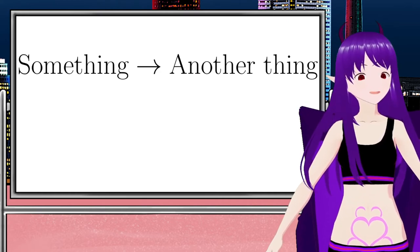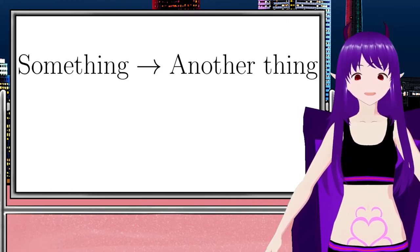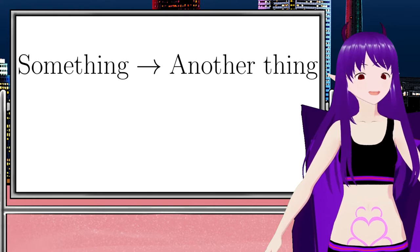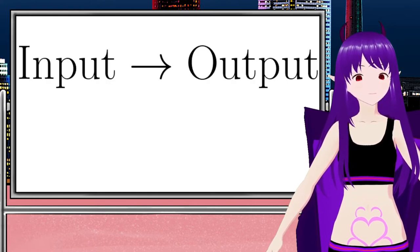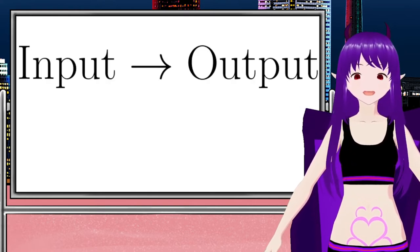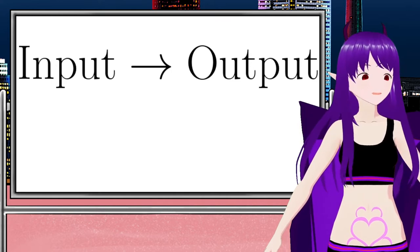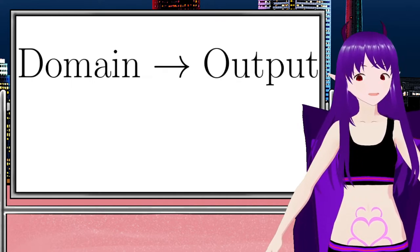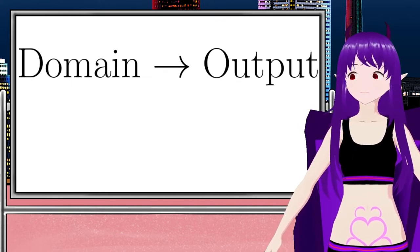In order for something to be a function it needs to express a relationship between an input value and an output value. What kind of thing a function takes as its input is called the function's domain. While the kind of thing a function returns is called its codomain.